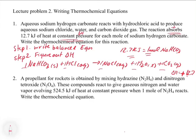For the second example: a propellant for rockets is obtained by mixing hydrazine, N₂H₄, and dinitrogen tetroxide, N₂O₄. These compounds react to give gaseous nitrogen and water vapor, evolving 524 kilojoules of heat at constant pressure when one mole of N₂H₄ reacts. These are liquids, so we need phase labels — liquid hydrazine and liquid dinitrogen tetroxide.